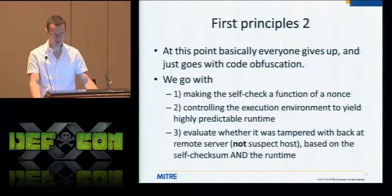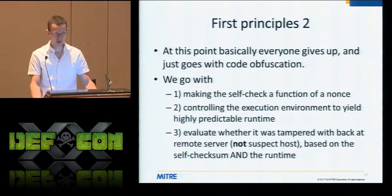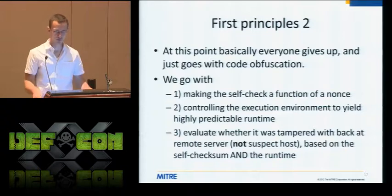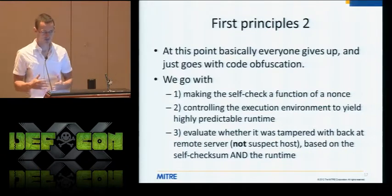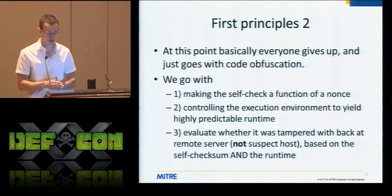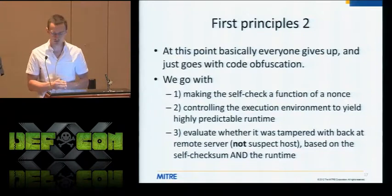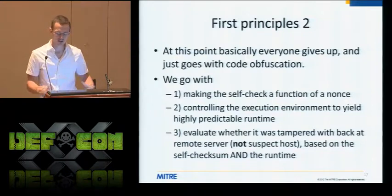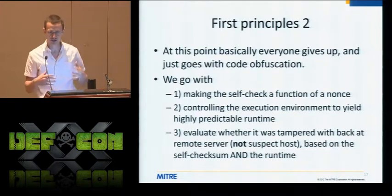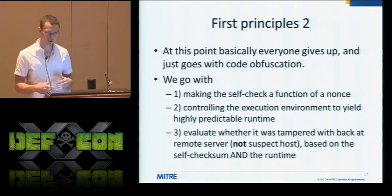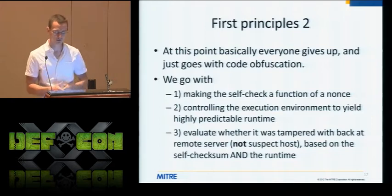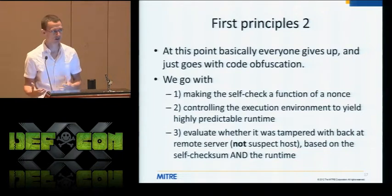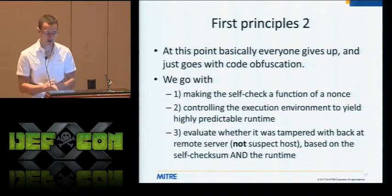We want to make this style of self-attestation better and more resilient to attack. To do that, we have to fundamentally change our approach. First, we have to make our self-check — our hash over our own code — a function of a nonce, a random value sent from a verifier. That way the attacker can't just hard-code the correct value, because it's going to be different depending on the random value coming from the verifier.